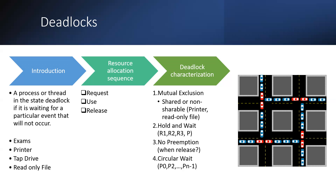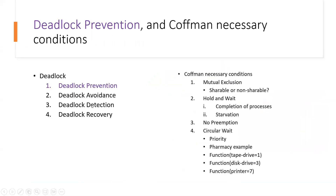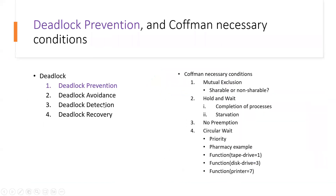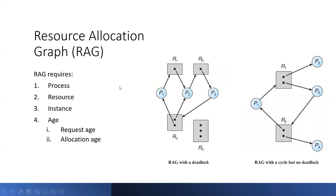So these are the four conditions for deadlock. This was the overall topic of deadlock — what is deadlock and what are the four conditions. Next we will cover deadlock prevention, avoidance, detection, and recovery. Before that, we need to cover resource allocation graphs for deadlock detection.